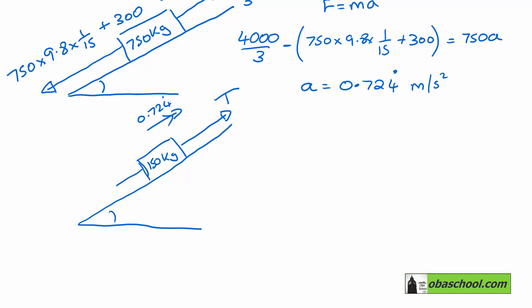And the forces this way are the gravitational component of the weight there. So 150 times 9.8 times 1 over 15. 150 this time because we're only considering the trailer. And that's plus 100 because, again, we're only considering the trailer. And the 100 is the non-gravitational resistance.